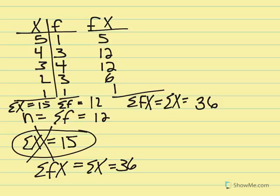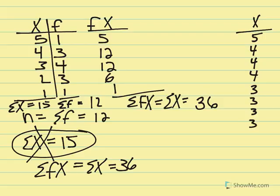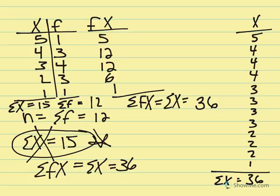To illustrate: if we listed all X values in raw form, 5 appears once, 4 appears three times, 3 appears four times, 2 appears three times, and 1 appears once. Taking the sum of all those raw values gives 36 — confirming that sigma FX is just a shortcut for determining the summation of all X values. Most questions will be phrased as 'sum of X,' but if the data is in a frequency table, first calculate FX for each row, then sum them.